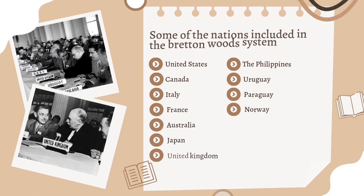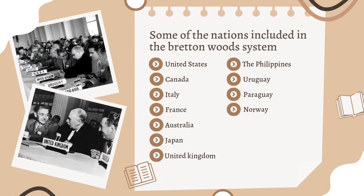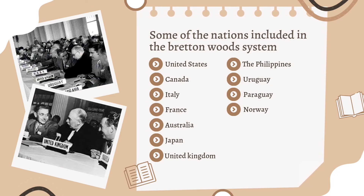Some of the nations included in the Bretton Woods system are: United States, Canada, Italy, France, Australia, Japan, United Kingdom, the Philippines, Uruguay, Paraguay, and Norway.